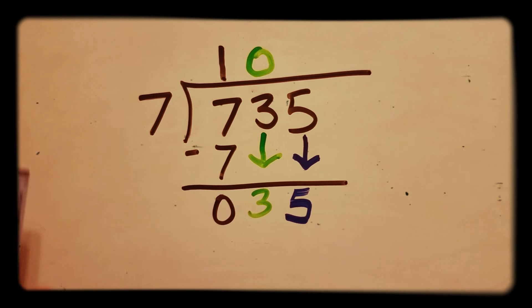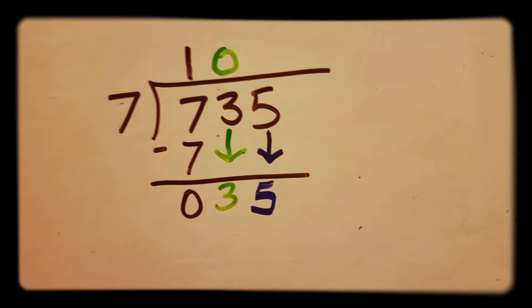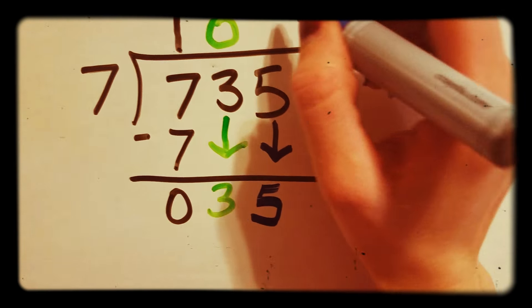So now we need to find out how many times 7 can go into 35. 7 goes into 35 five times.